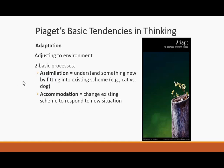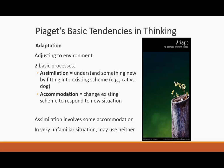For example, when the speaker was young, he thought all dogs were male and all cats were female — a schema that did not work. When told there was a male cat, that did not fit, and he had to accommodate that new information to learn that cats and dogs can be either male or female. In very unfamiliar situations, we may use neither assimilation nor accommodation — we may just be totally lost and have to build a schema from scratch.